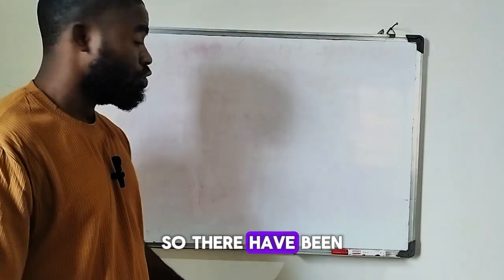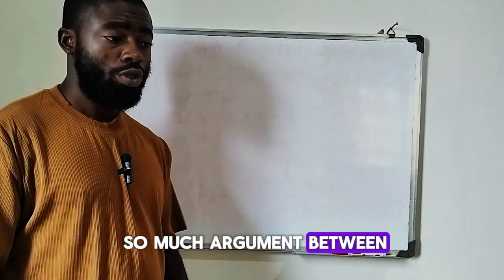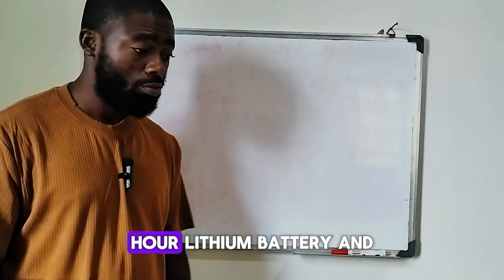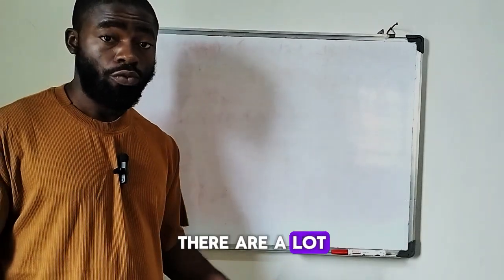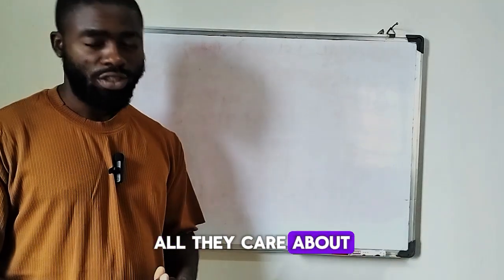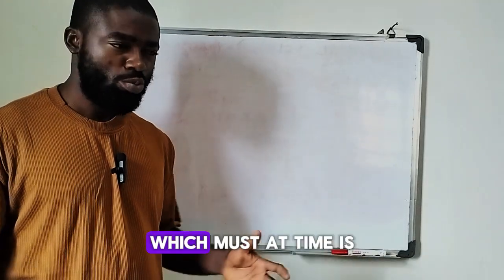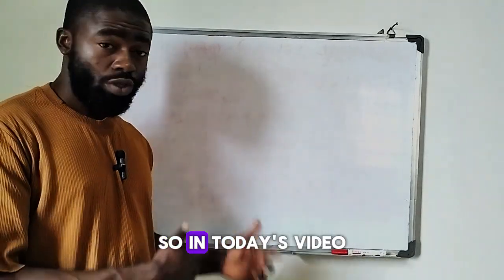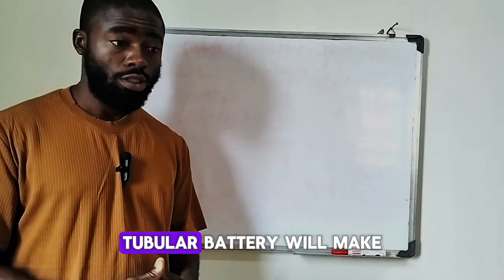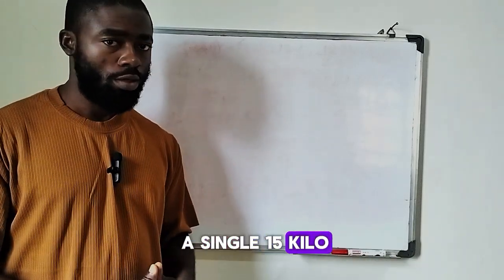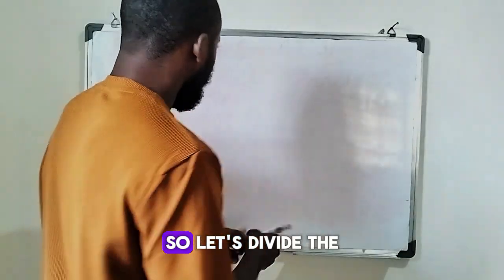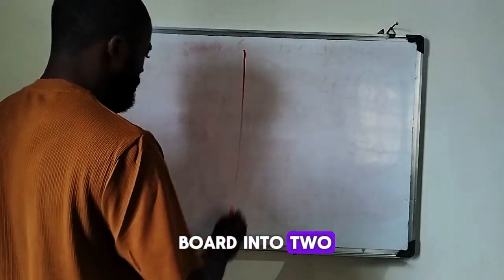There has been so much argument about how many tubular batteries make a single unit of a 15 kilowatt-hour lithium battery. There is a lot of overhyping on the internet without considering the calculation — all people care about is the DoD, which most of the time is not correct. In today's video, we are going to do a little calculation to see how many units of 220Ah tubular battery will make a single 15 kilowatt-hour battery.